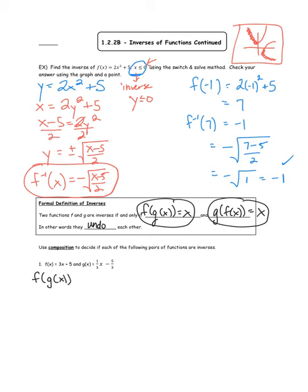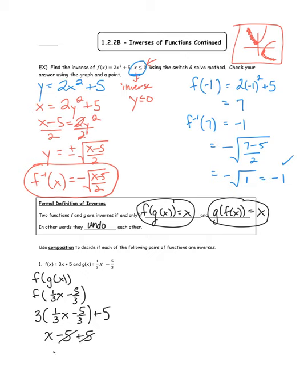f(g(x)) = f(x/3 − 5/3). Going to function f, that's 3·(1/3·x − 5/3) + 5. Distributing: 3·(1/3) = 1, so we get x; 3·(−5/3) = −5; then +5. The −5 and +5 cancel, leaving x. So f(g(x)) = x. Going back to the definition: yes, this condition is satisfied.